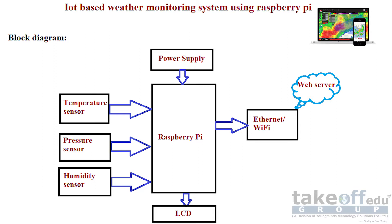IoT is nothing but connecting physical objects to the internet and enabling exchanging of data in a more secure way. In this project, the data from all sensors will be accessed as input and sent to the web server for online monitoring purposes. Let us move on to a detailed description of our project — here you can see the block diagram.